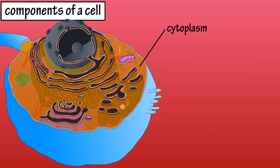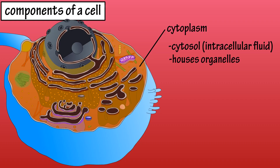The cytoplasm consists of the cytosol, which is a watery solution also referred to as intracellular fluid. It has a syrup-like consistency and contains a high water content. The cytoplasm also houses the tiny organs, or organelles, in the cell.